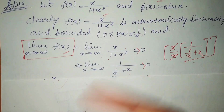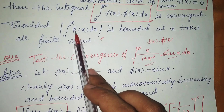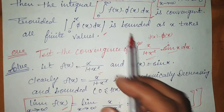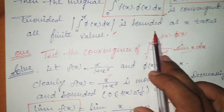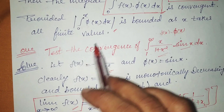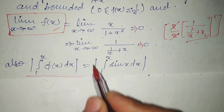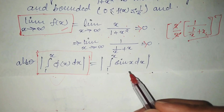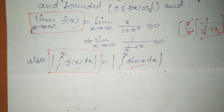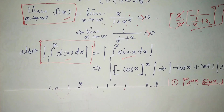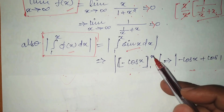The third condition is that the integral from 1 to x of |φ(x)| dx must be bounded as x takes all finite values. Here φx = sinx. The integral of sinx is −cos x, with limits from 1 to x. Putting the limits, we get −cos x + cos 1, which equals cos 1 − cos x.